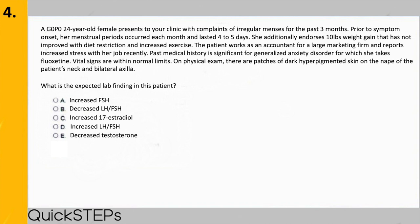Question four: a G0P0 24-year-old female presents with complaints of irregular menses for the past three months. Prior to symptom onset her periods occurred each month and lasted four to five days. She additionally endorses 10 pounds of weight gain not improved with diet restriction and increased exercise. The patient works as an accountant and reports increased job stress. Past medical history is significant for generalized anxiety disorder, for which she takes fluoxetine. On physical exam there are patches of dark hyperpigmented skin on the nape of her neck and bilateral axilla. What are the expected lab findings?